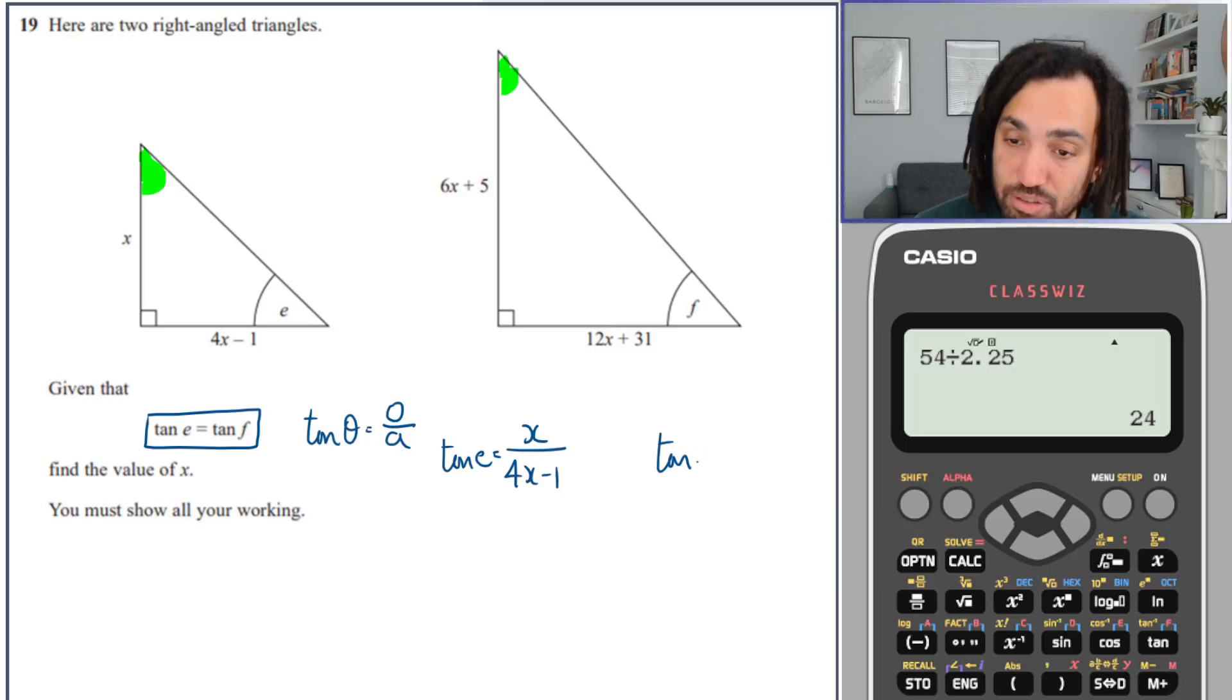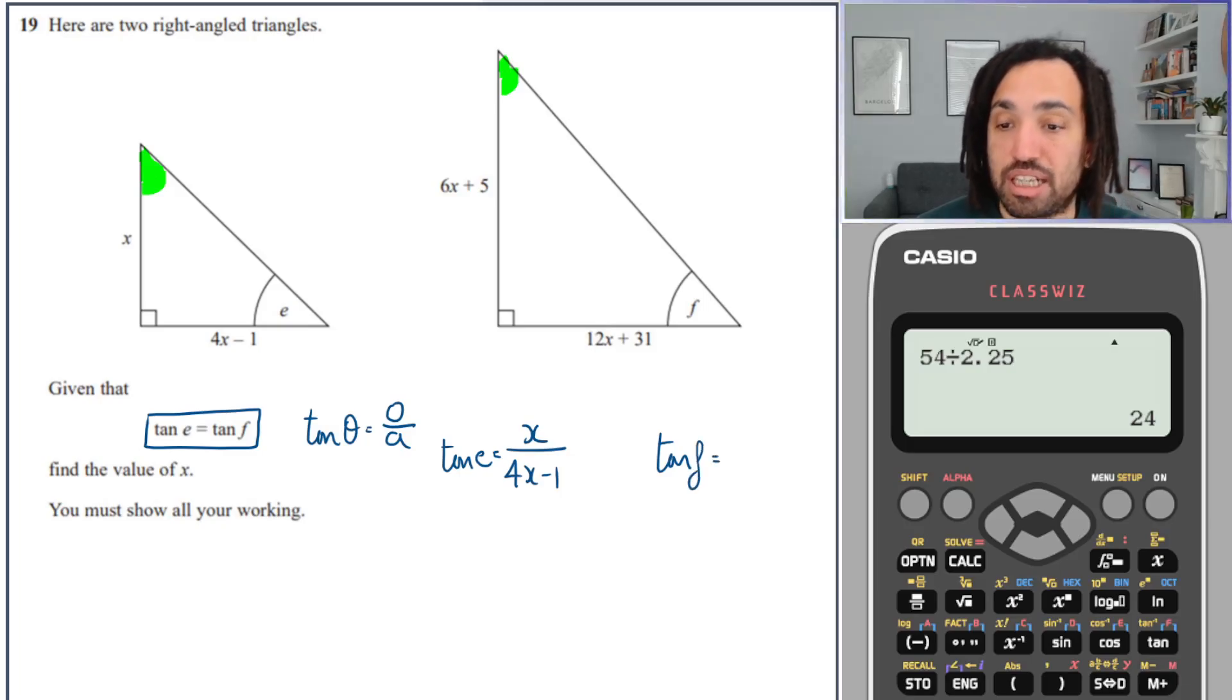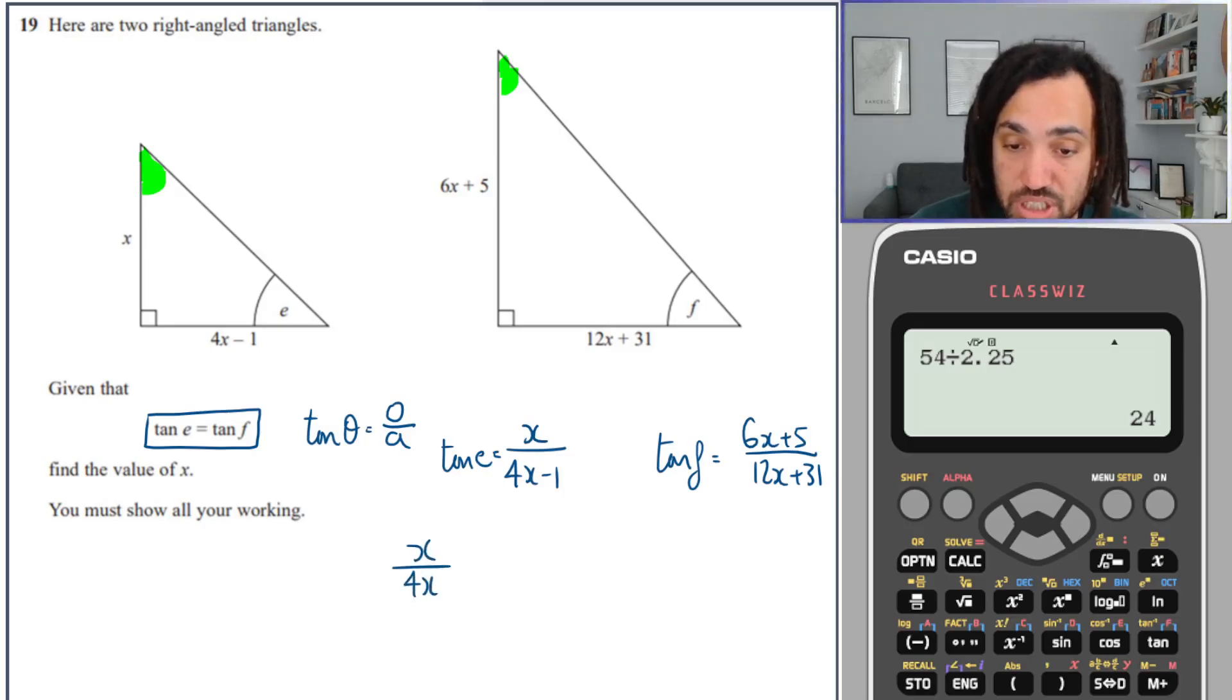So that would be what tan E is equal to. And tan F is the other triangle, and that's the opposite, which is 6x plus 5, over the adjacent, which is 12x plus 31. So because we know that tan E is equal to tan F, these two expressions must be equal to each other.